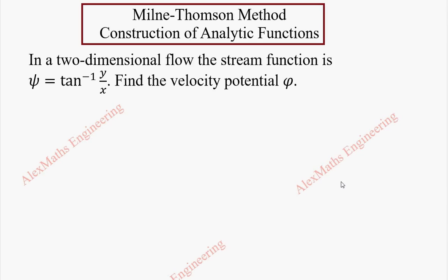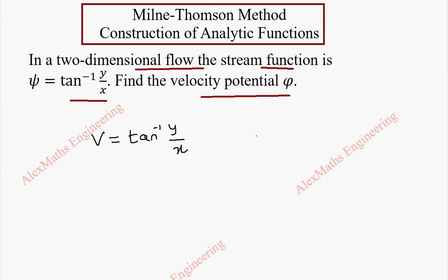Hi students, this is Alex. In this video, in a two-dimensional flow, the stream function is tan inverse(y/x). We have to find the velocity potential. This stream function is taken as the imaginary part V of the analytic function, and we have to find the real part u, which is the velocity potential.